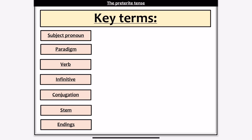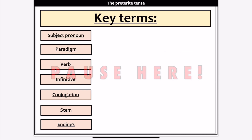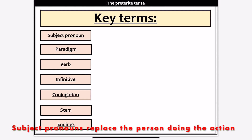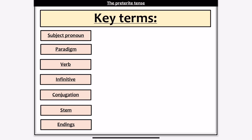What I would suggest you do now is just recap over the key terms we use when talking about conjugation. Pause the video here for two seconds while you do that. Subject pronouns are pronouns that replace people who are doing the actions. These are the subject pronouns: I, you, he, she, it, we, you plural, and they.